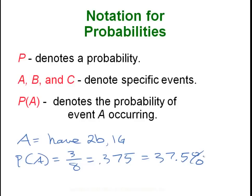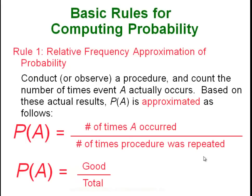So it's simply three out of eight, or .375, or 37.5 percent. You can always write probabilities as a fraction, a decimal, or a percentage — it's really dealer's choice. Here's the first basic rule for computing probability, and we've already seen it: it's the number of times event A occurred divided by the total number of times the procedure was repeated, or what I like to call good over total — the good ways the experiment could happen over the total number of ways. The book may present two or three different approaches but it all comes down to good over total.